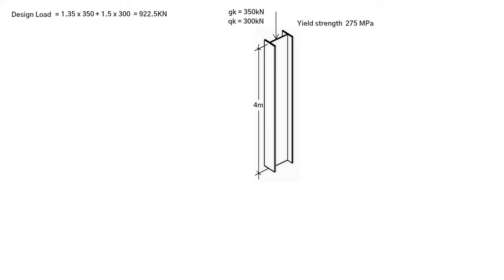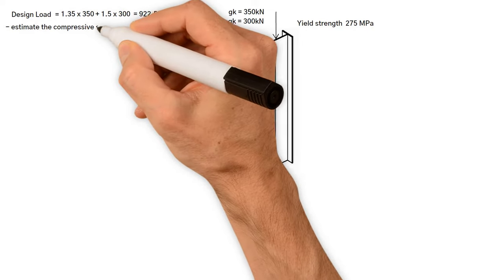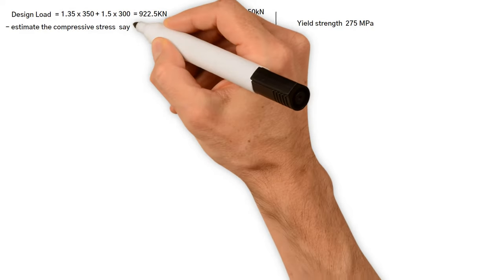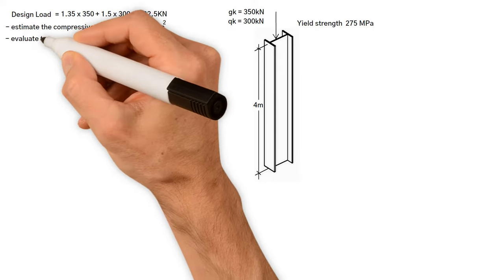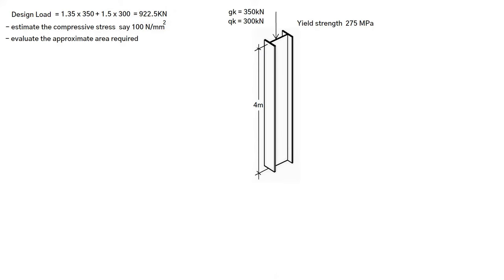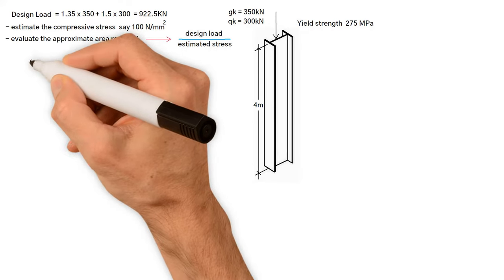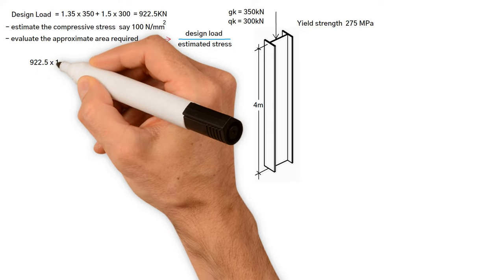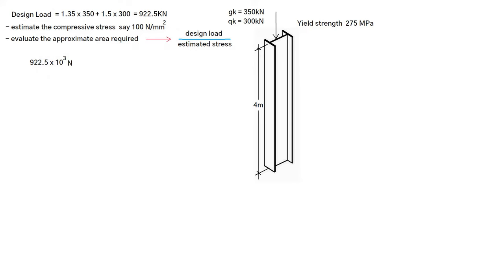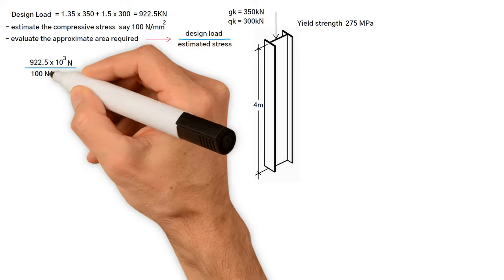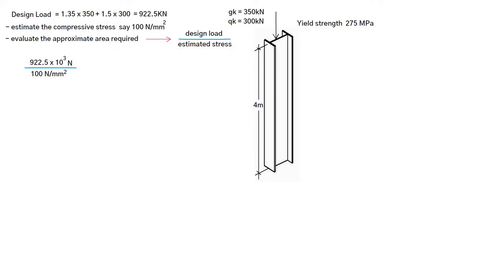As we mentioned earlier, the first thing we need to do is estimate the compressive stress in the column. Let's say 100 N per millimetre squared, and evaluate the approximate area required. Hence, approximate area equals design load divided by estimated stress, which is 922.5 times 10 to the 3 to convert to newton, divided by 100 N per millimetre squared, and that gives us 9200 millimetres squared.